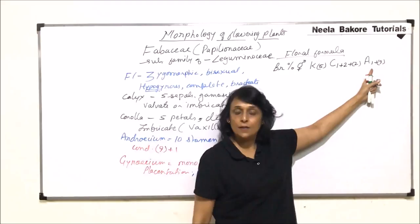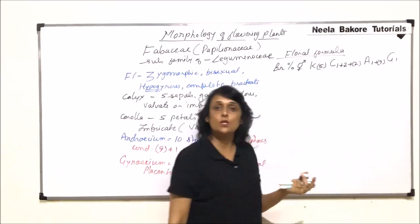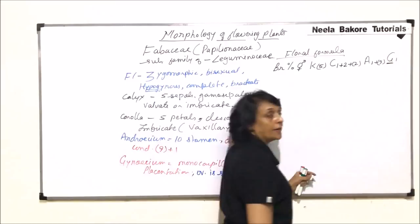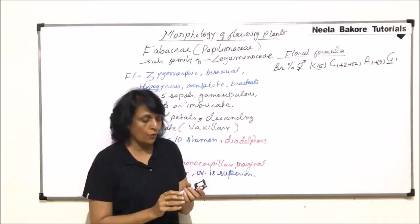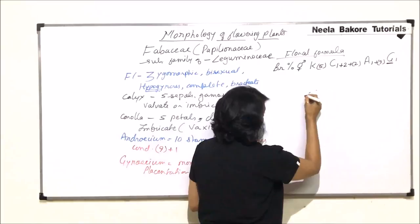After this diagram which we are going to draw in a minute, we will come back to this and we will discuss some important things. G is 1. If it is just 1 we don't have to put a bracket, but it is superior ovary. So this is the floral formula. We will come to this floral formula after we are done with the diagram.